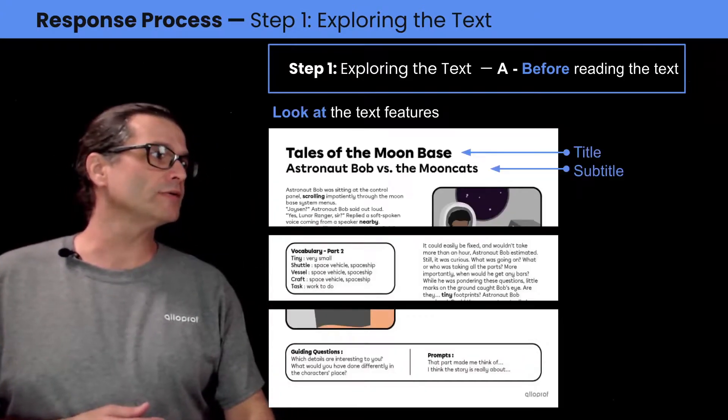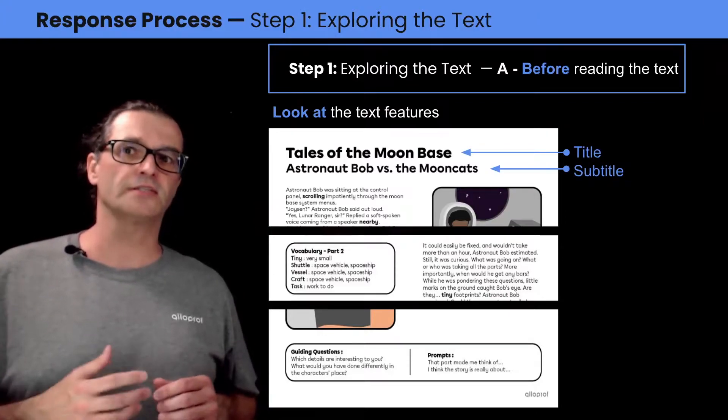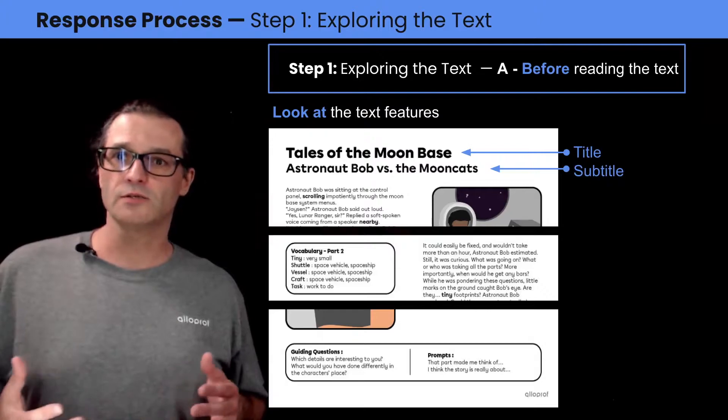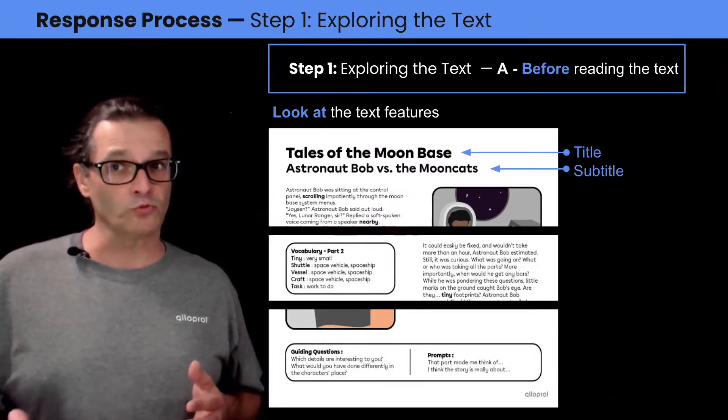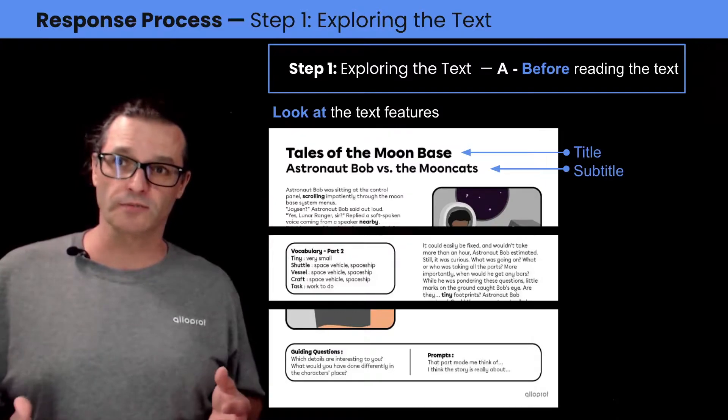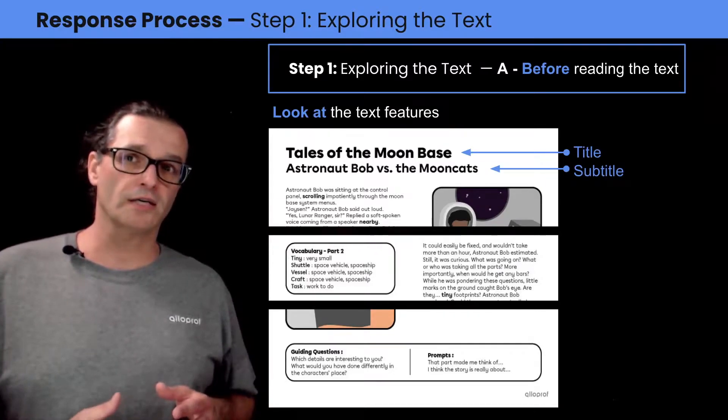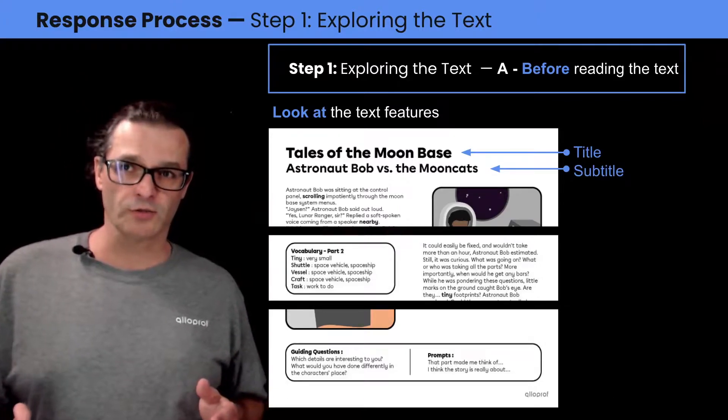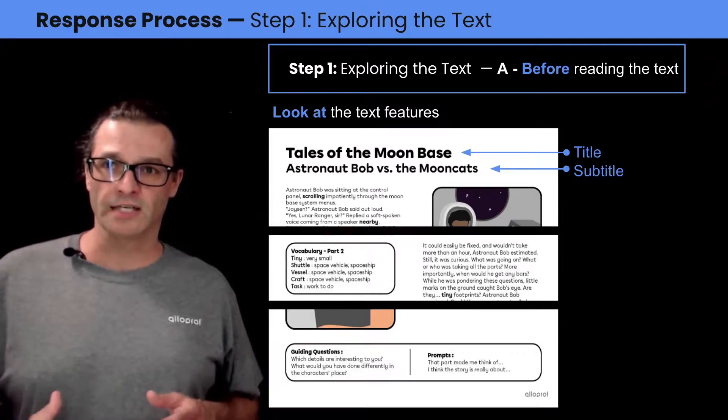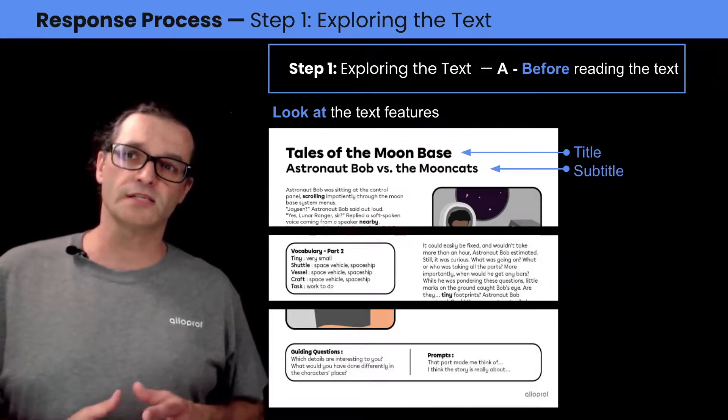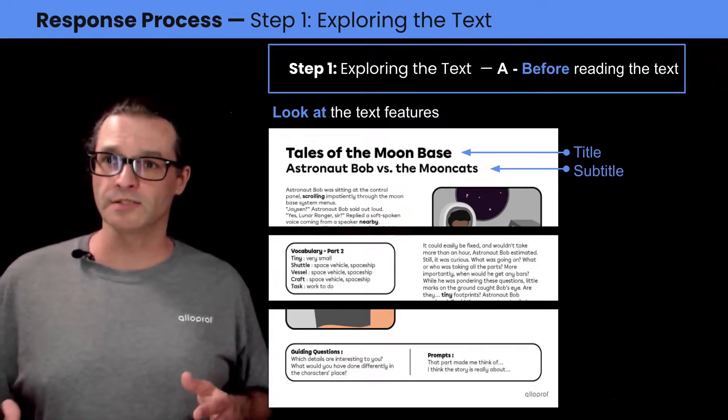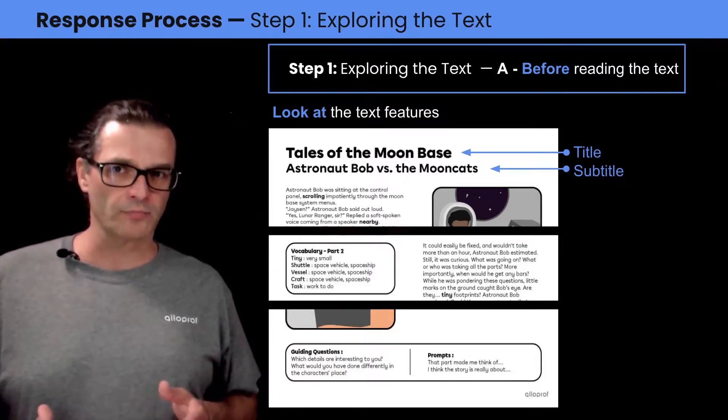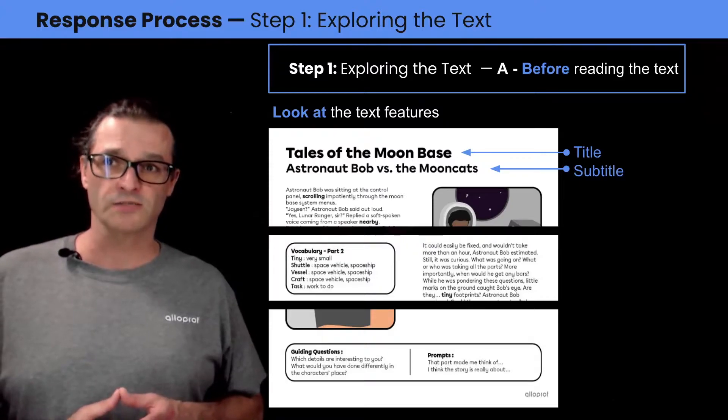In this story, the title and the subtitle are text features. The title says, Tales of the Moonbase. Tales means story. And Moonbase tells us that it's moon-related, maybe science fiction. The subtitle is Astronaut Bob versus the Mooncats. Astronaut Bob might be a character in the story. Versus tells us there's probably some element of conflict. And Mooncats sounds made up, so definitely there's science fiction in there.